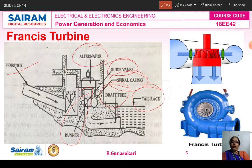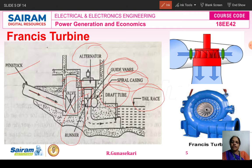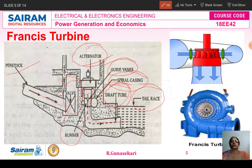The water flows from the reservoir to the turbine through the penstock. When the valve opens, water enters the runner of the turbine. The kinetic energy of the water flow drives the turbine, which converts it into mechanical energy. The turbine is coupled with an alternator — the turbine drives the alternator, and the alternator generates electrical energy. The water then exits through the draft tube to the tail race.